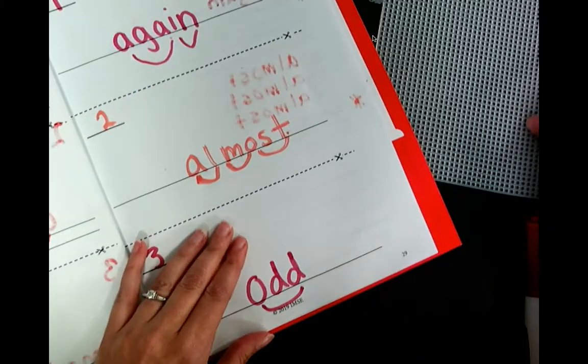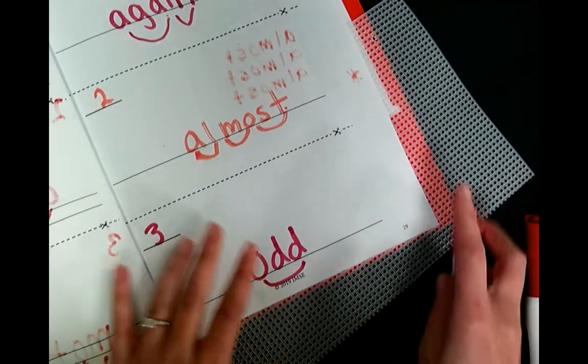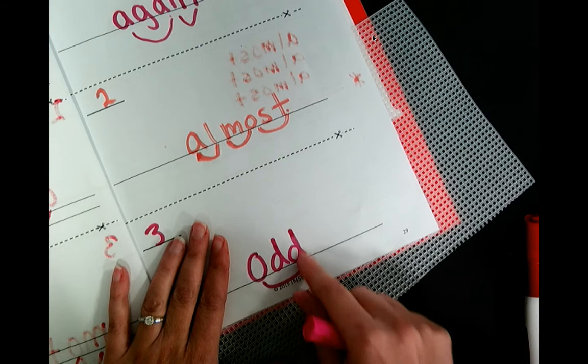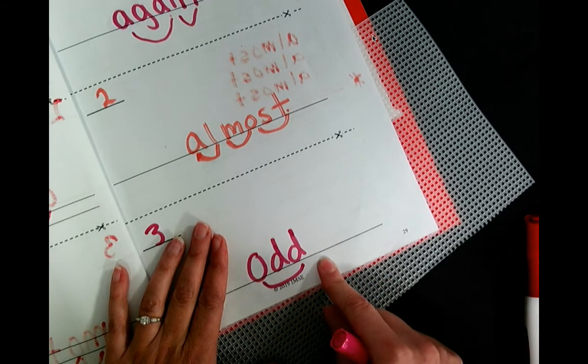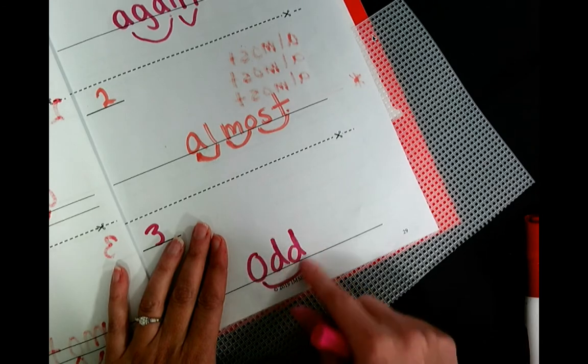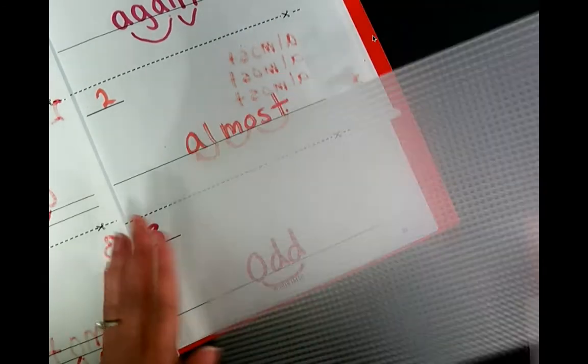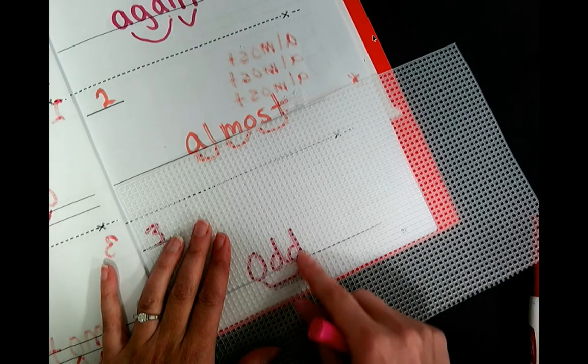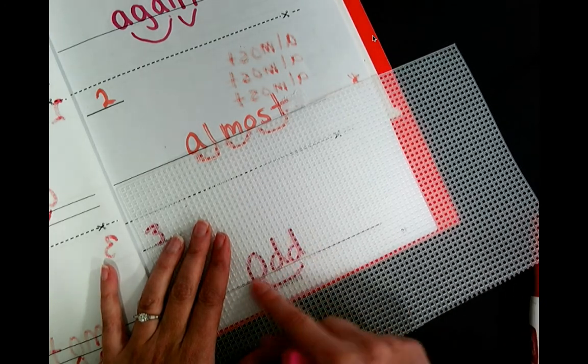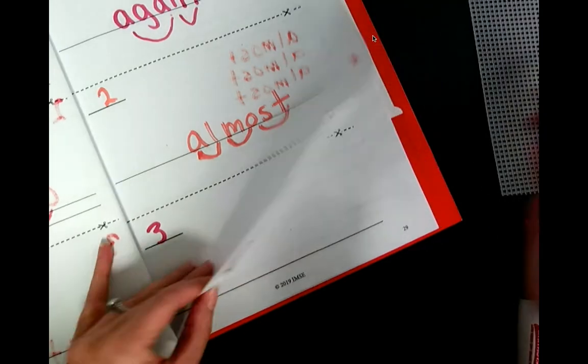Go ahead and trace it. You're spelling it. Do it again. O, D, D, Odd. [tracing repeats three times] Write it three times. Write it here.